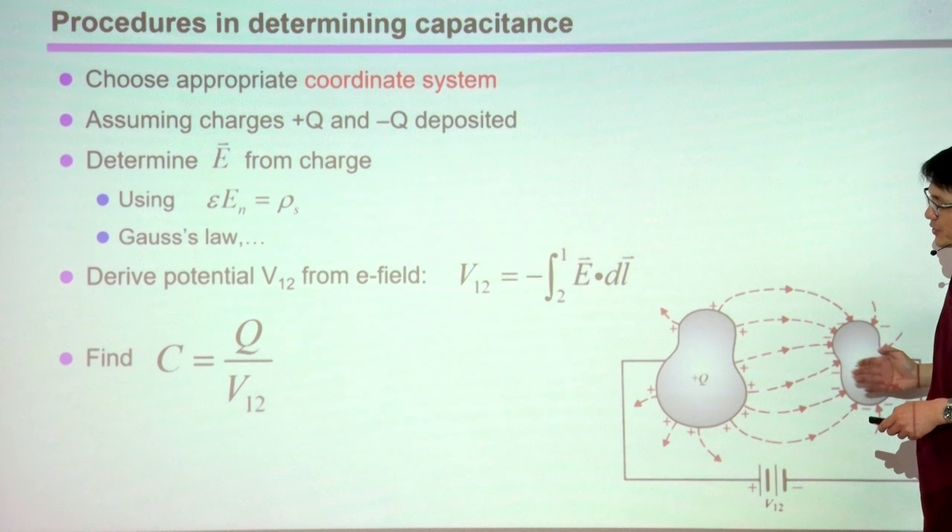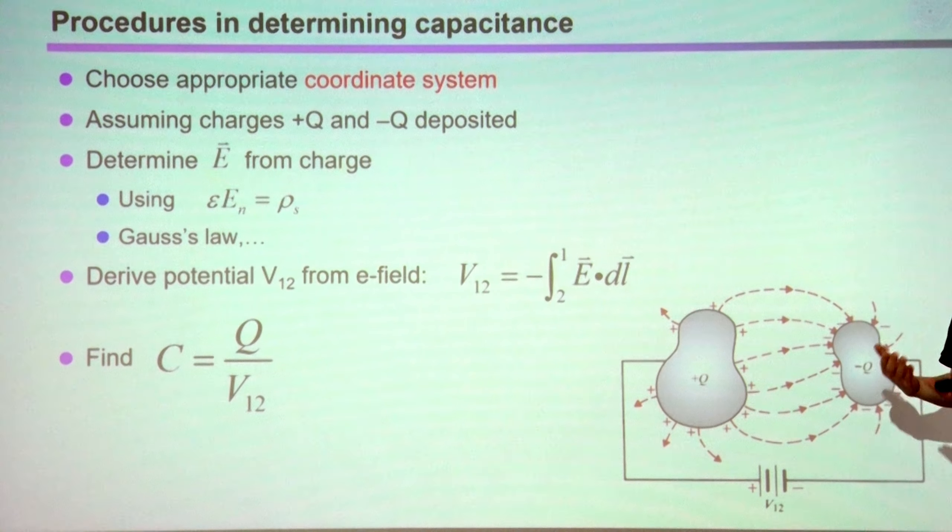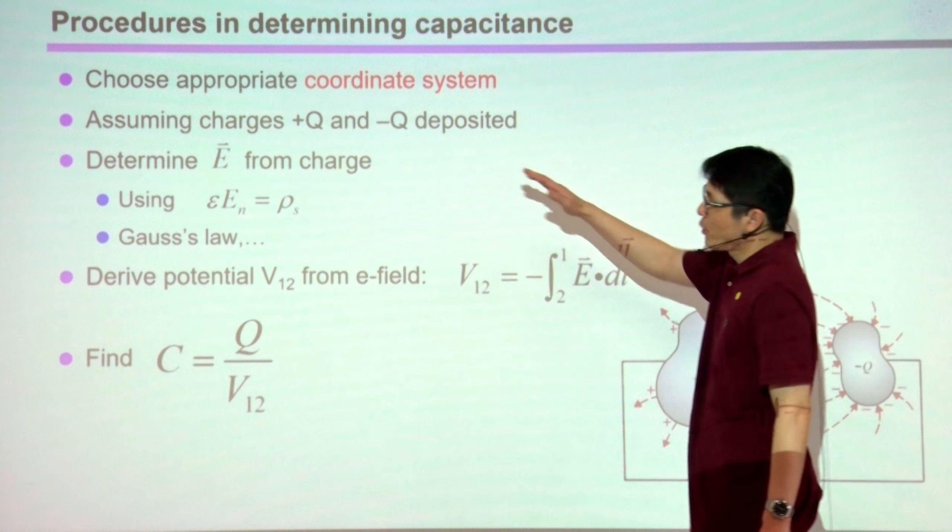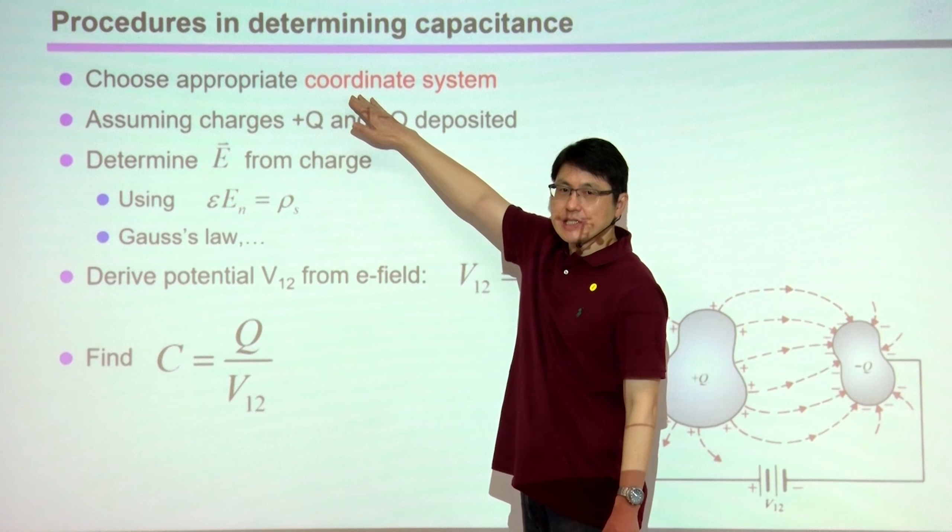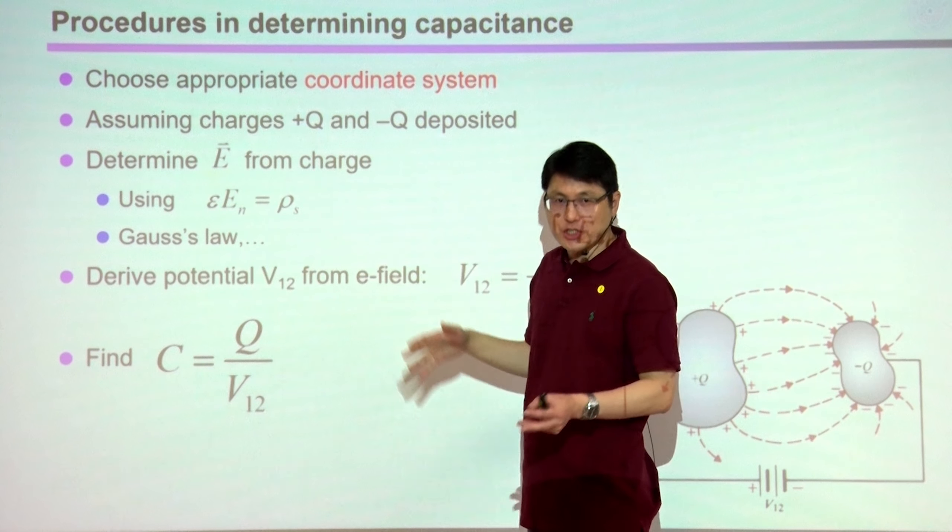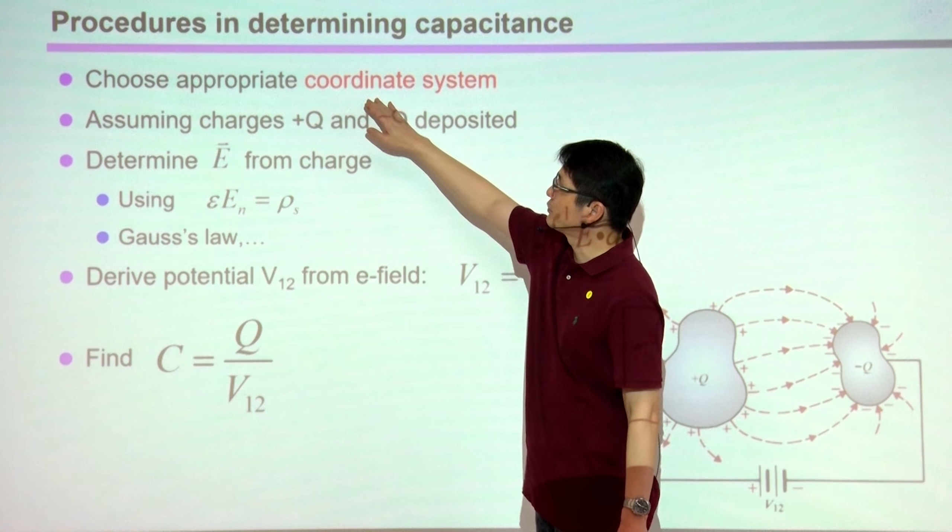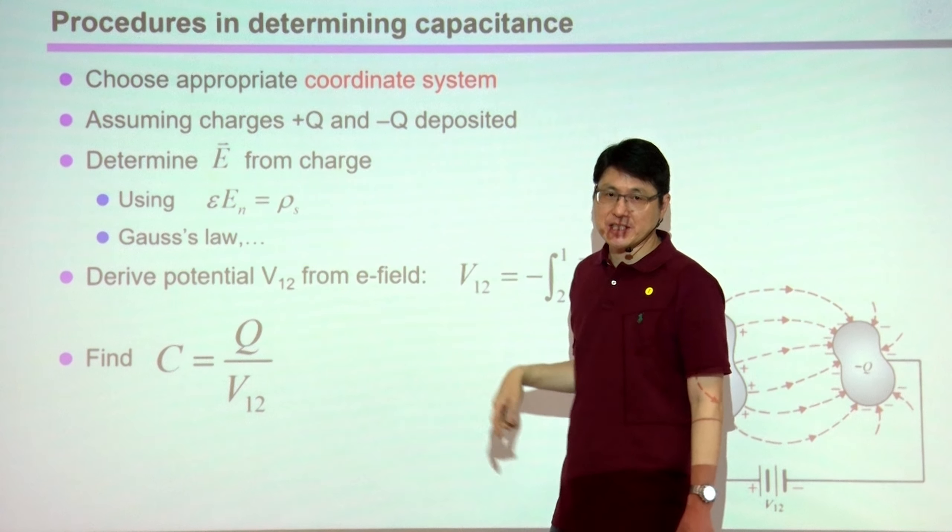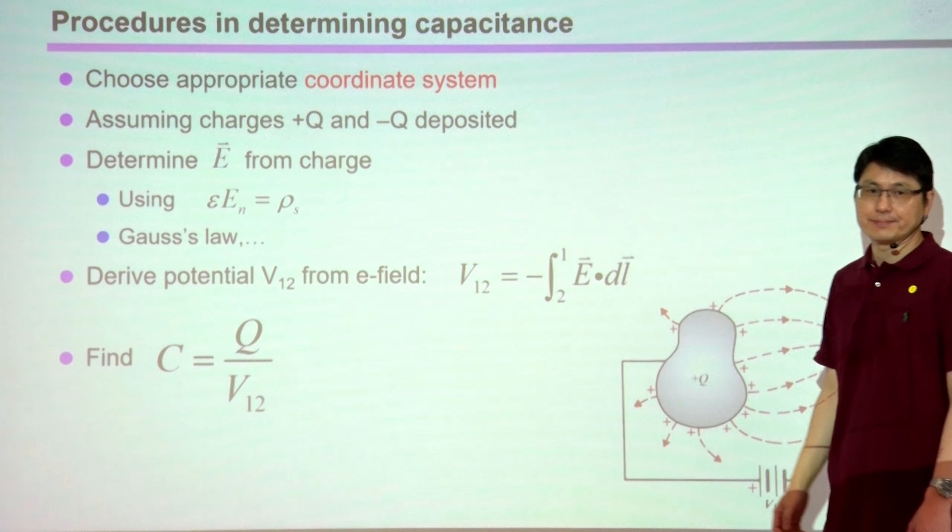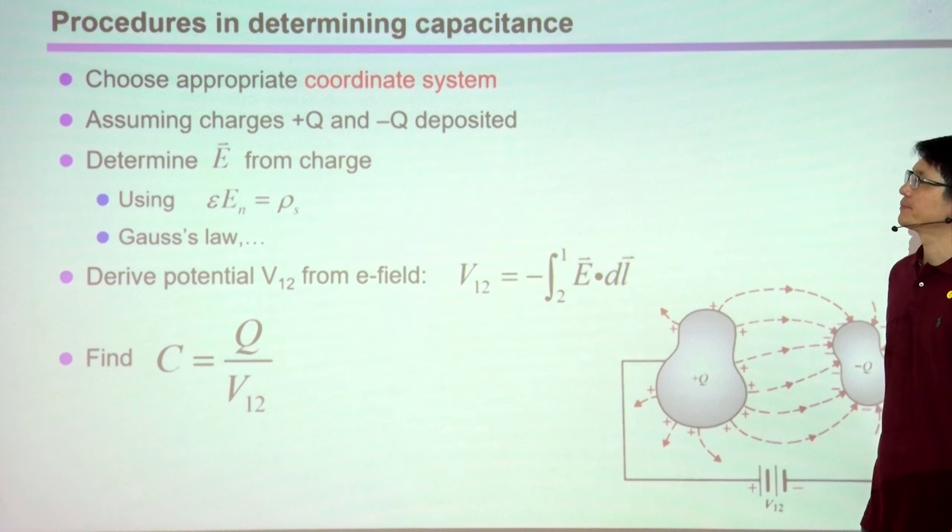If we have two conductors serving as a capacitor, we always need to evaluate the geometry and choose a good coordinate system to work with. That's the first step.